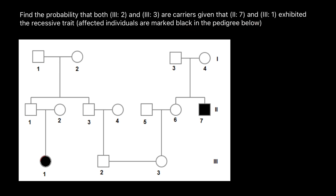When we look at this pedigree, let's pay attention first to this couple. They are both phenotypically normal but have an affected daughter, so this gives us information that this is an autosomal recessive genetic disorder. The genotype of the daughter is small a, small a, and that means both parents must have one dominant allele and one recessive — so they have to be heterozygous, with genotype capital A and small a.